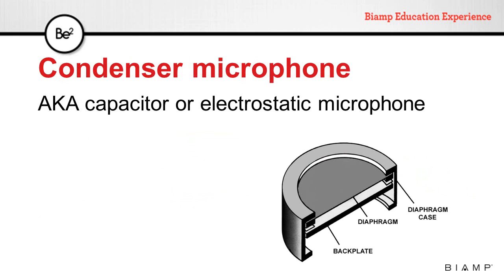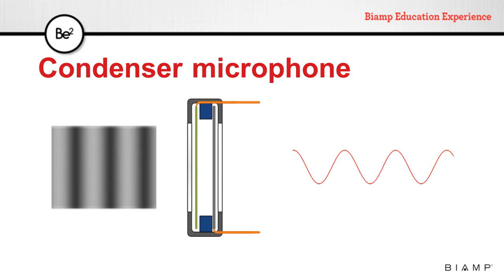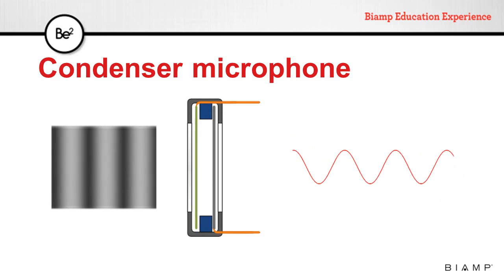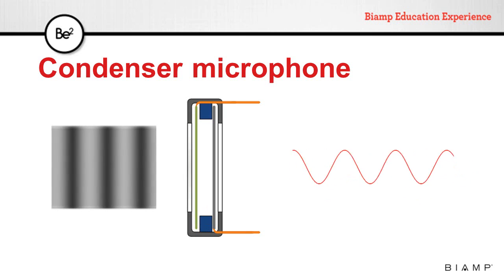Condenser microphones, also known as capacitor or electrostatic microphones, have a diaphragm encapsulated in a case separated to a backplate. When sound arrives at this microphone, only the diaphragm moves, changing the space between the diaphragm and the backplate. The changing distance between them will change the charge of this capacitor, and this electrical signal will represent the movements of the diaphragm.